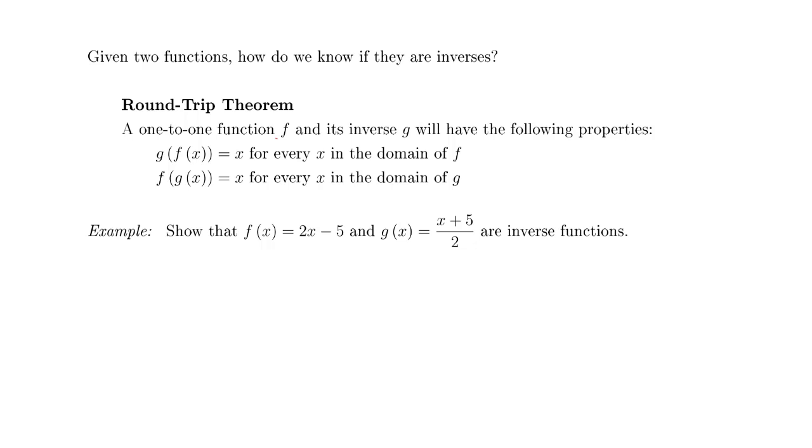What does it say? A one-to-one function f and its inverse g will have the following property. So if these two functions are inverses, then compositions g of f of x will always give you x and f of g of x will always give you x.